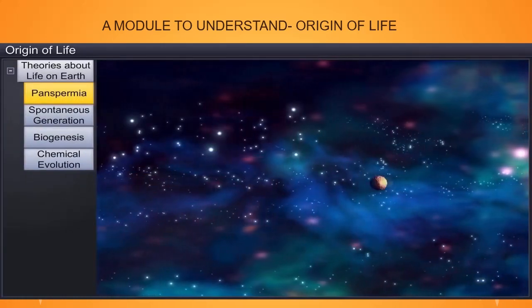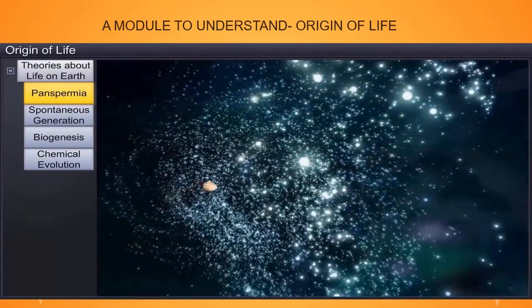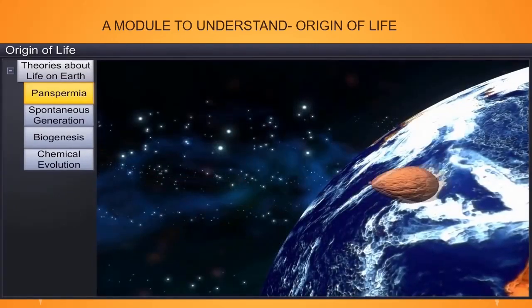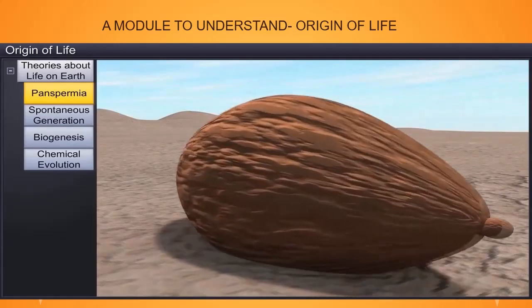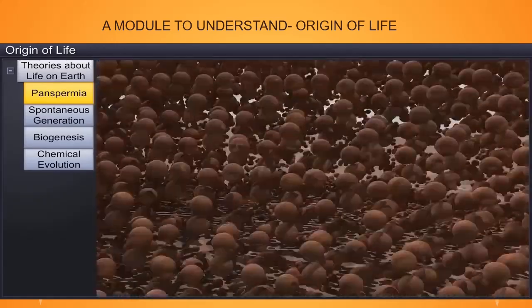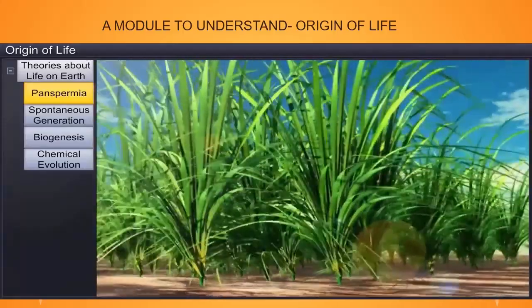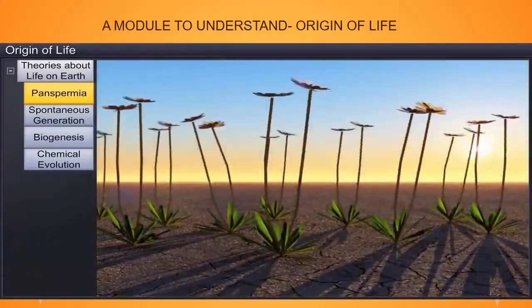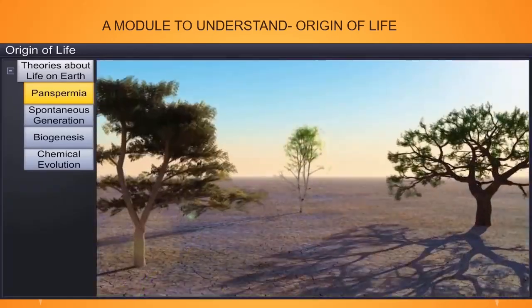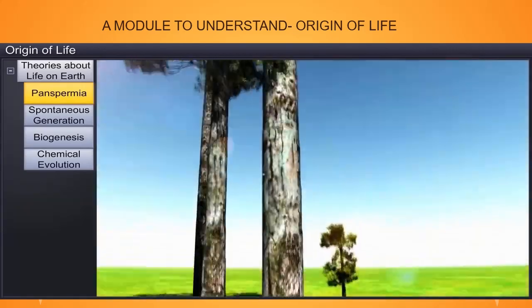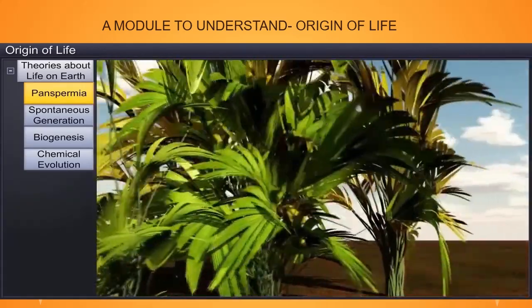Panspermia is the oldest theory founded by Greek thinkers. It explains that units of life called spores were transferred to different planets. Panspermia assumes that seeds of life exist all over the universe. Therefore, the life on earth may have originated after one such seed was deposited on the earth from somewhere in the universe. This theory generates much interest even today.